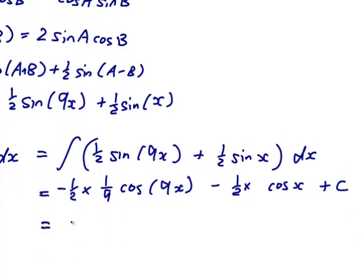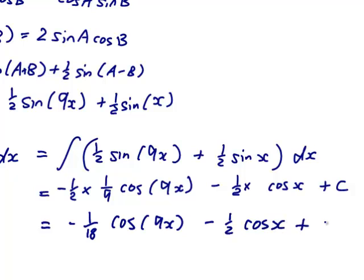So the answer is equal to minus 1 over 18 cos 9x minus a half of cos x plus c.